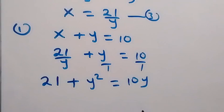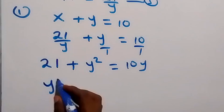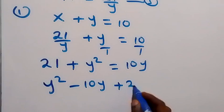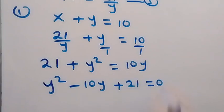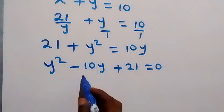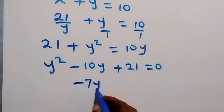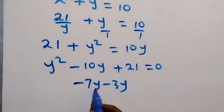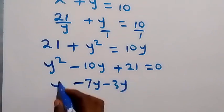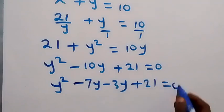Let's take 10y to the other side and rearrange to form an equation: y squared minus 10y plus 21 equals to 0. We can solve this by factorizing — we separate minus 10y as minus 7y minus 3y, and when we multiply we get y squared plus 21.